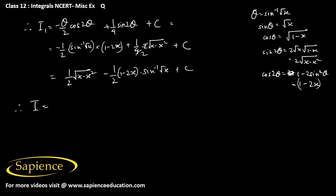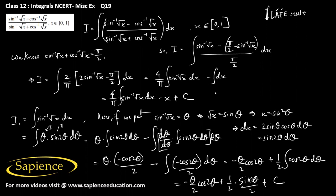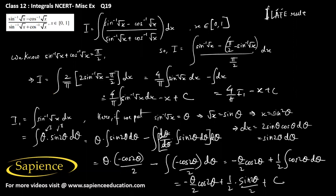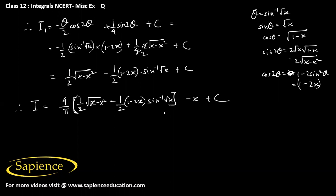Therefore the final answer I equals 4 by pi into I1 minus x plus c. Substituting I1, it will be 4 by pi into 1 by 2 root over x minus x squared, minus 1 by 2 into 1 minus 2x into sin inverse root x, minus x plus c. Therefore the final answer is 2 by pi root over x minus x squared, minus 2 by pi into 1 minus 2x into sin inverse root x, minus x plus c. This is the final answer.